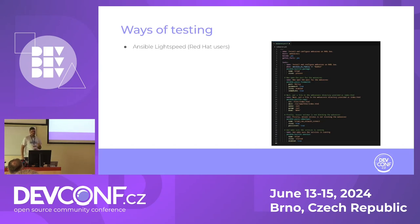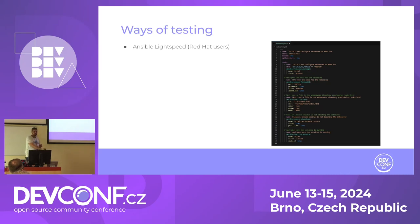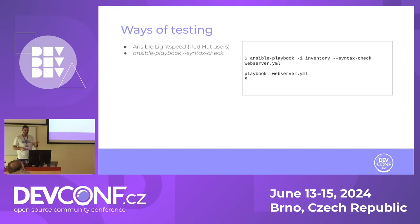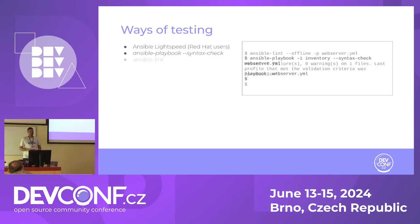Before talking about Molecule, what other options do we have to test Ansible? You could use Ansible Lightspeed - a licensed product from Red Hat with IBM - which uses AI to recommend how to write your code. But Lightspeed will not check the outcome of your code; it recommends how to write it. Another option is syntax check, which tells you if indentation is wrong or a module doesn't exist, but again, it won't tell you the outcome.